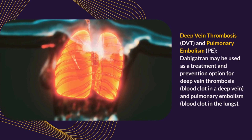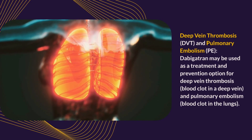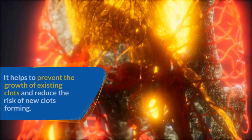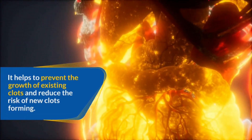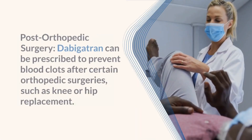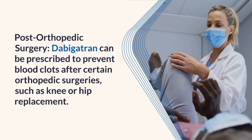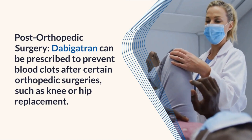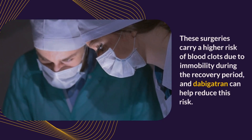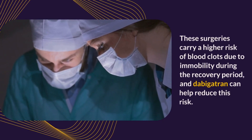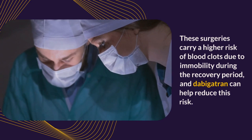Dabigatran may be used as a treatment and prevention option for deep vein thrombosis and pulmonary embolism. It helps to prevent the growth of existing clots and reduce the risk of new clots forming. Dabigatran can be prescribed to prevent blood clots after certain orthopedic surgeries, such as knee or hip replacement. These surgeries carry a higher risk of blood clots due to immobility during the recovery period, and dabigatran can help reduce this risk.